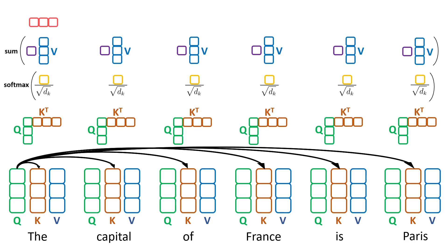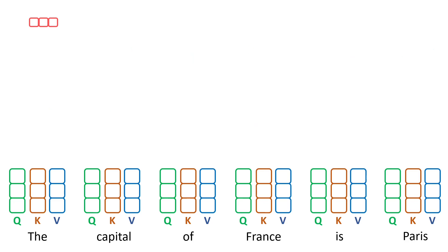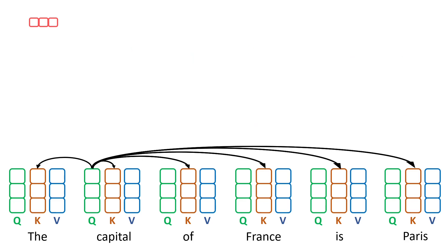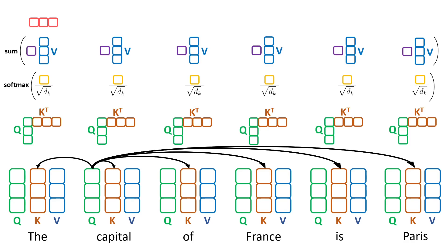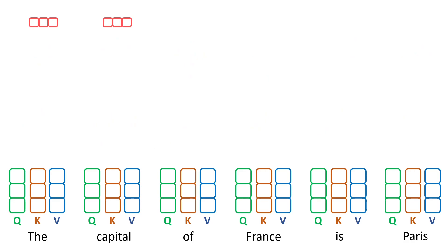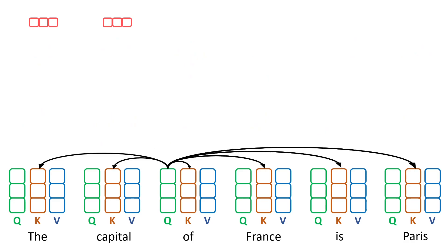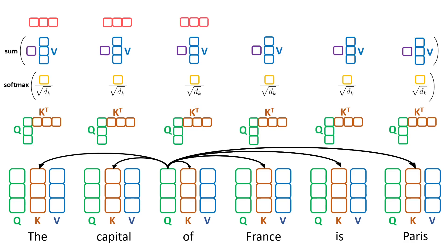What we did until now was to compute the representation for the first token. To compute the representation for the second token, we take the query of the second token, do a dot product with the key value of all tokens in the sequence, apply the same operation, and we obtain its representation. We do the same for the third token and all remaining tokens.